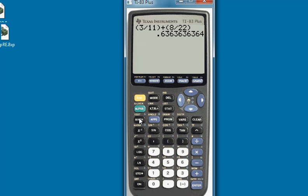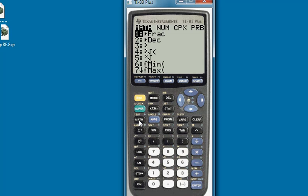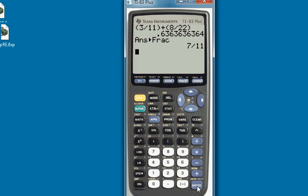We can convert the decimal into a fraction by pressing the math key on the far left of the keypad and choosing number 1, convert to fraction. And, like so, and here we are. 7 11.